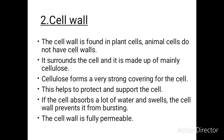The cell wall is found in plants but animal cells do not have cell walls. The cell wall surrounds the cell, found just outside the cell membrane, and is made up mainly of cellulose — that's why it is called the cellulose cell wall. The cellulose cell wall forms a very strong covering for the cell, helping to protect and support it. The cell wall also prevents the cell from bursting when it absorbs a lot of water and swells. The cell wall is fully permeable. The main function of the cell wall is to protect and support the cell.